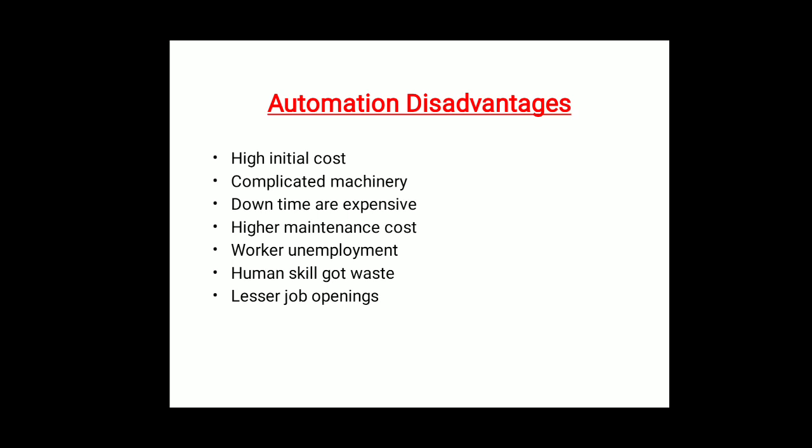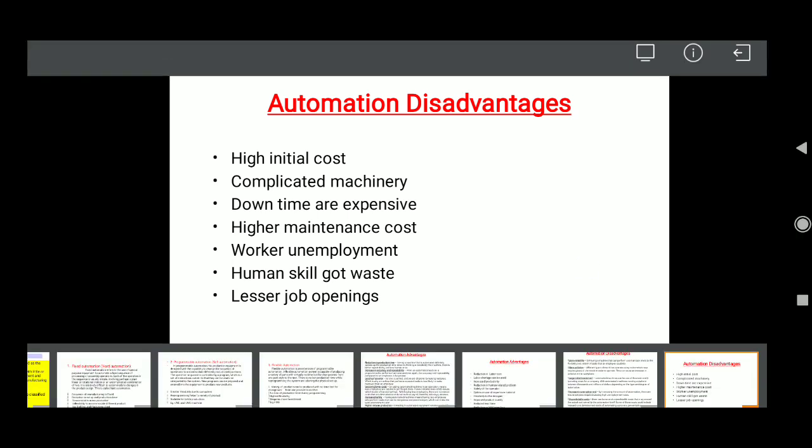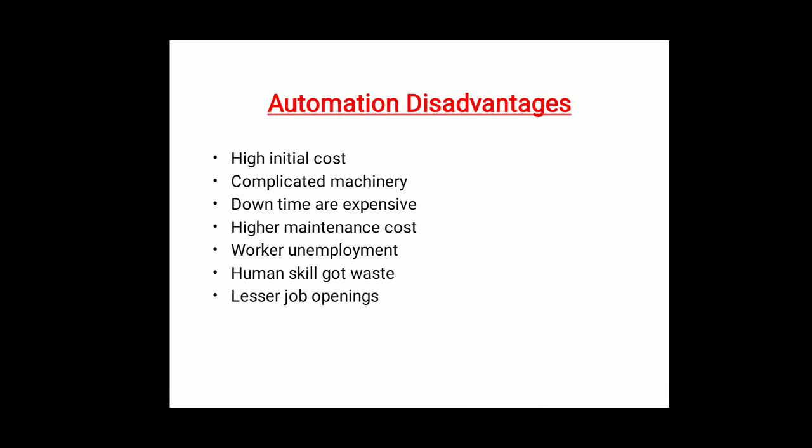So today we have seen what is meant by automation, its types — fixed automation, programmable automation, and flexible automation — and the advantages and disadvantages of automation. For today's lecture this is enough. Thank you so much. The remaining part we will see in the next lecture.